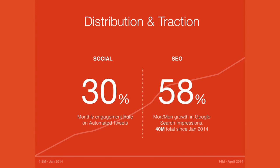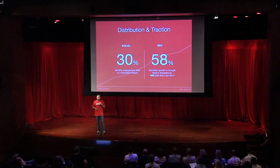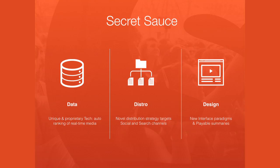Let's talk a little bit about numbers. 30% of all those auto-tweets get favorited, retweeted, followed, or thanked. And since opening for registration in January, we've had over 40 million Google search impressions for Scene pages — and that number's been growing 58% month over month.